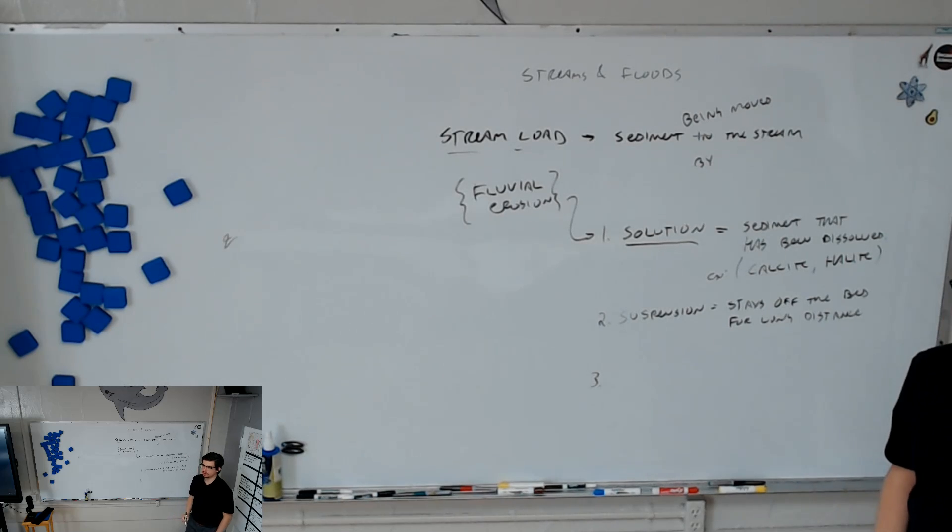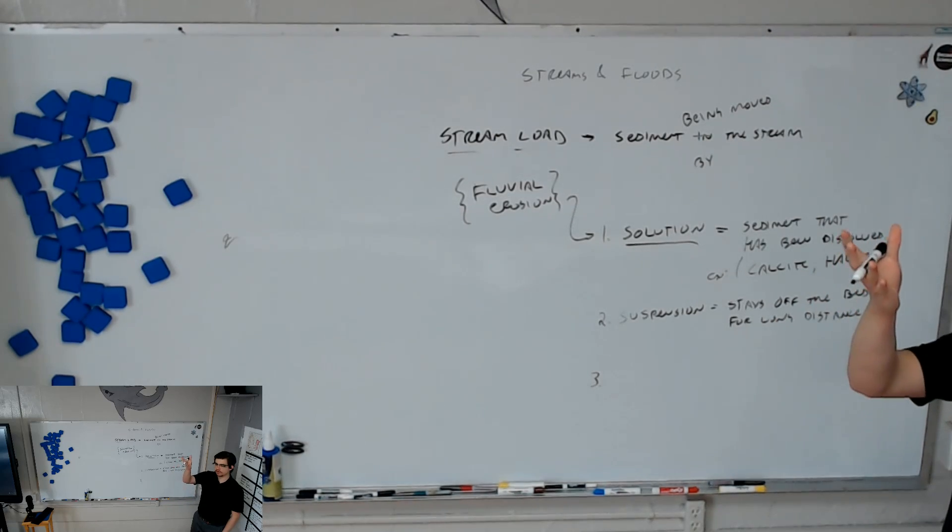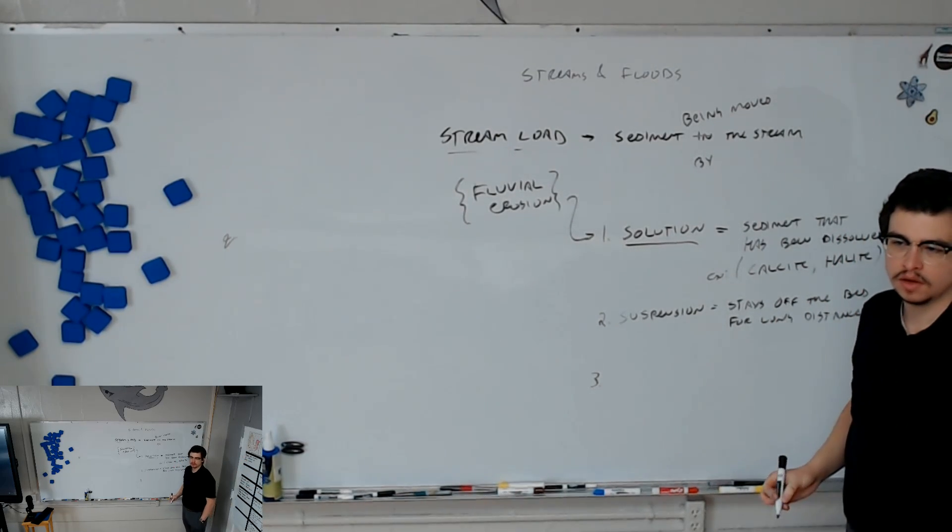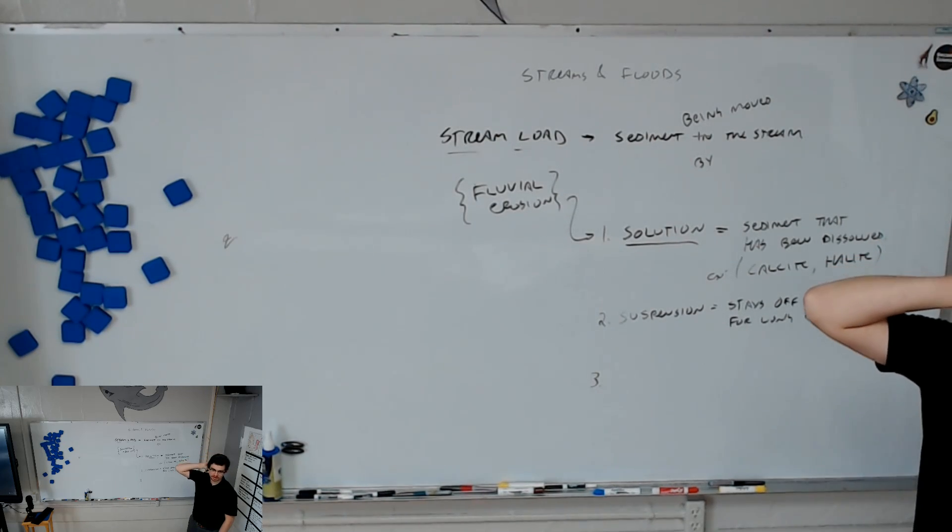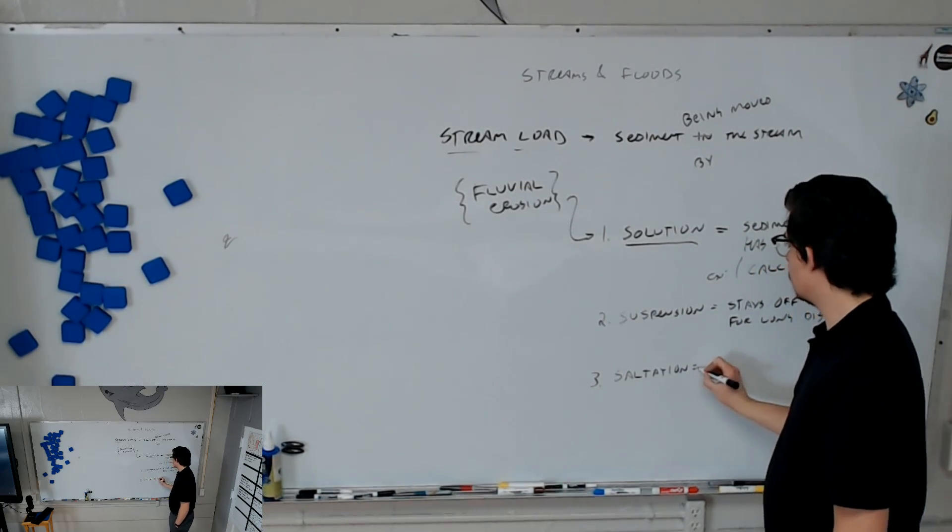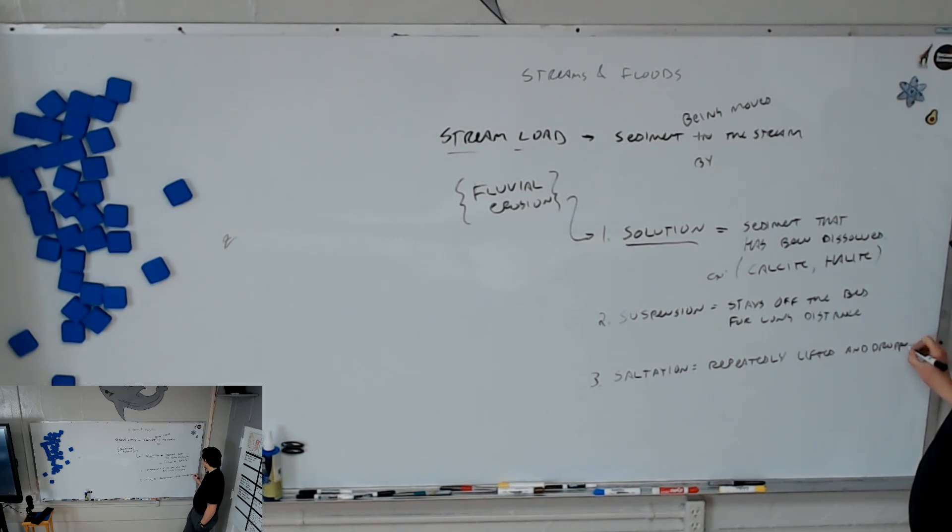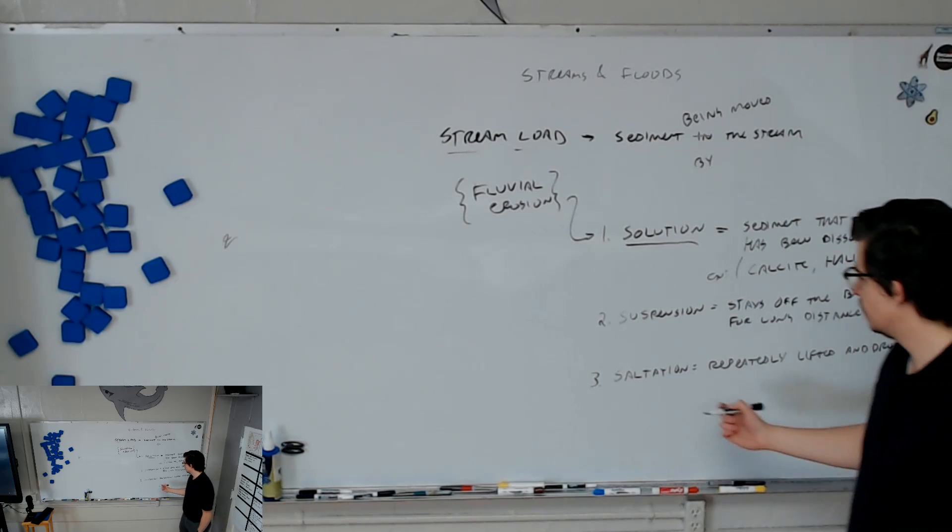If I use the word bed here, do you know what I mean? Yes. Like the bottom of the stream, right? It stays off the bed for long distances, right? It's being suspended, just like it was with the Aeolian erosion. You can probably think about what the next one will be. Do you remember what we called that next one? So it's not carried the whole time. It was lifted by the action of the river and then dropped, and then lifted again and then dropped. Do you remember what that was? Yeah, it was jumping. Yeah, jumping is what it means, but we had a special Latinate word for it. Saltation is what it was. Saltation.